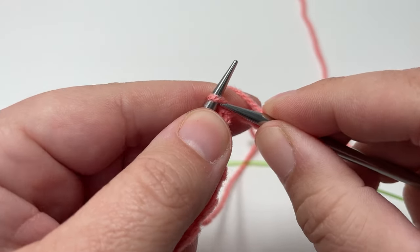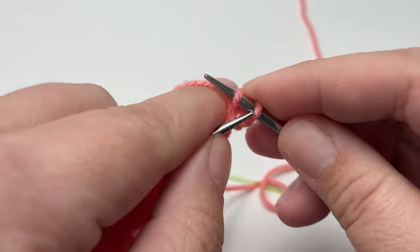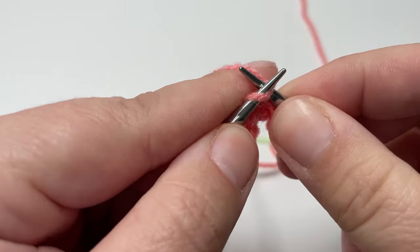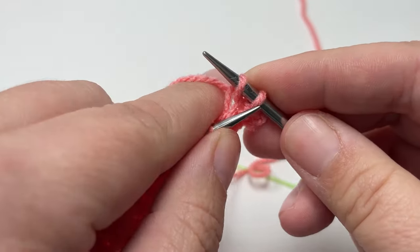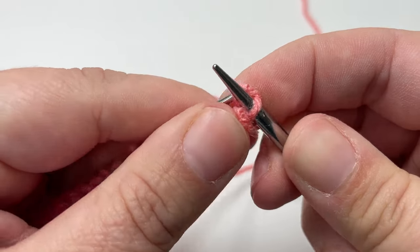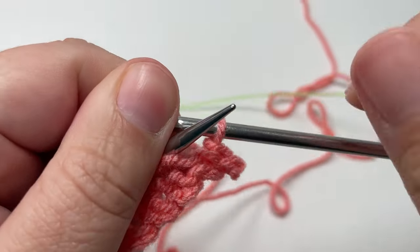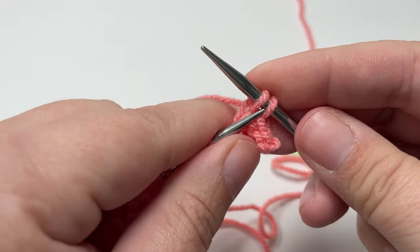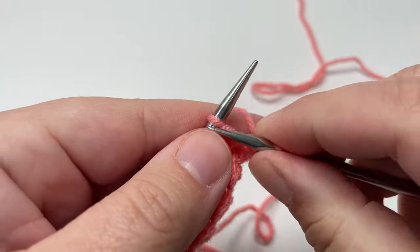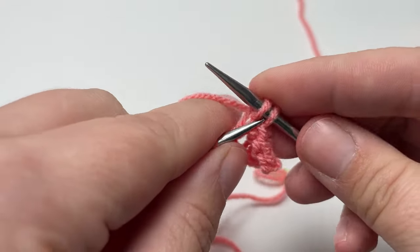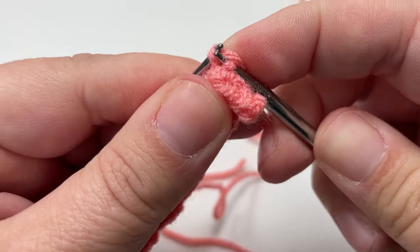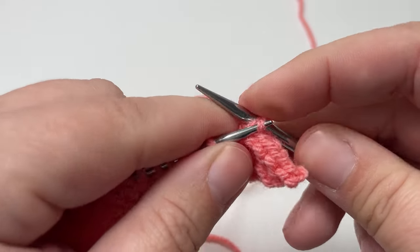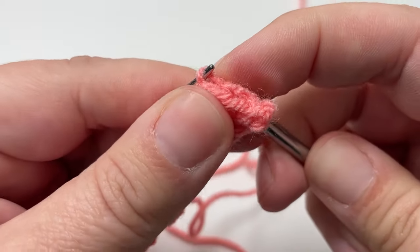And we do that by knitting the first two stitches, lifting the first stitch over the second stitch, knitting another stitch, lifting that stitch over the stitch you've just knitted. So you should never have more than two stitches on your right hand needle. You want to knit and lift all the way along. And that gives you a lovely neat cast off edge and removes your work from your needles to bring it to a finished item.